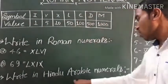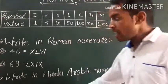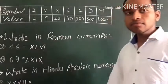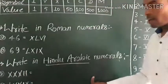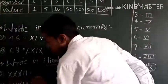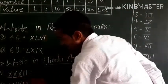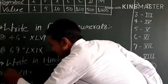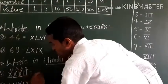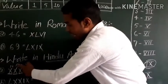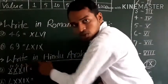Next question: Write 32 in Roman numerals. We read it as 30 plus 2. Thirty is written as XXX — that is, X is 10, XX is 20, and XXX is 30. Then 2 is written as II. So 30 plus 2 equals 32, which in Roman numerals is XXXII.